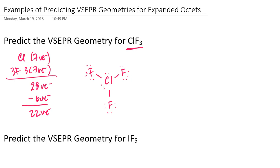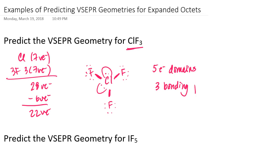After distributing all 22 remaining electrons, I can count the electron domains on the central atom. There are five electron domains here. Breaking this down further, three of those domains are bonding pairs of electrons, referring to the single bonds, and I have two lone pairs.